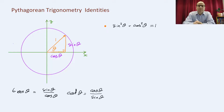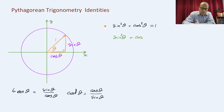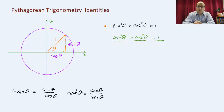We take the first identity — sine squared theta plus cos squared theta is equal to 1 — and we divide all terms by sine squared theta.